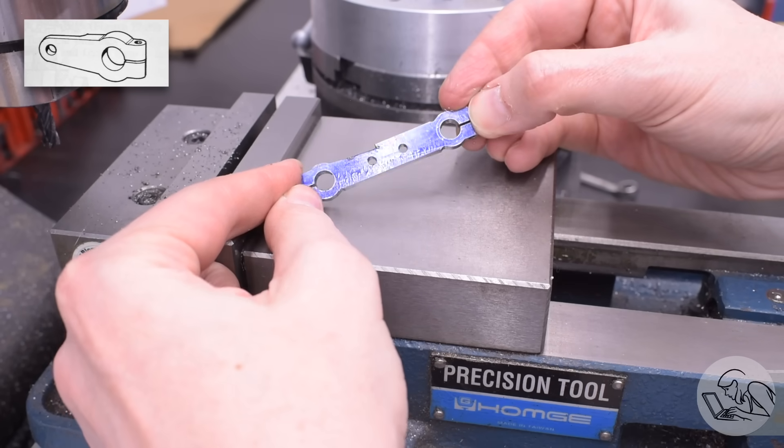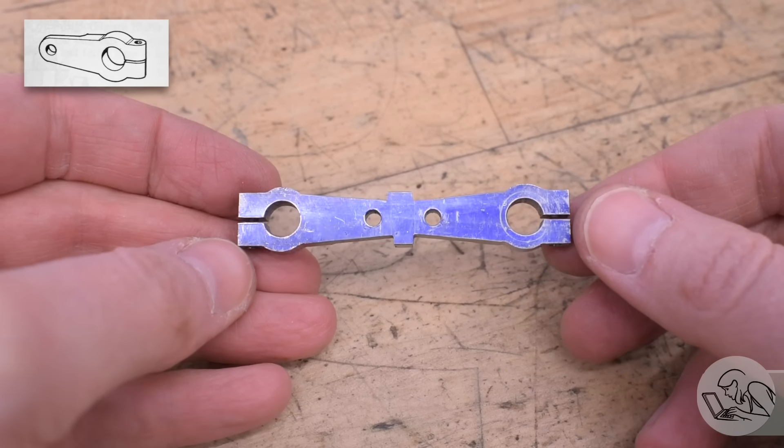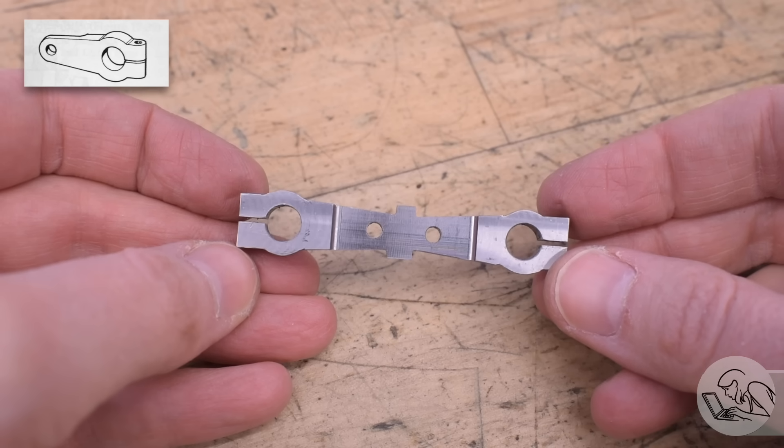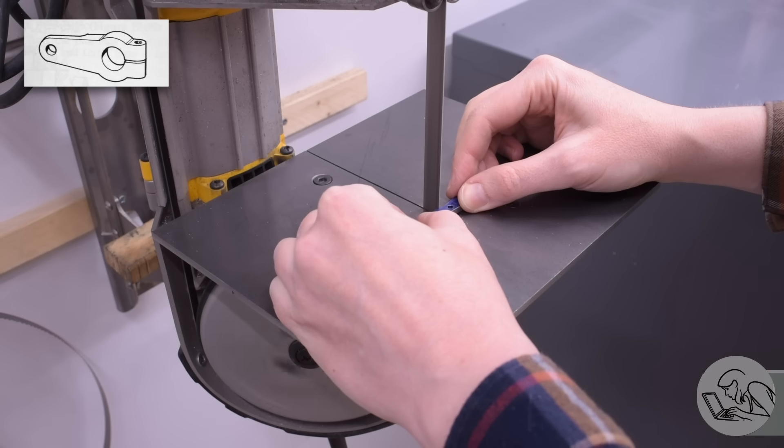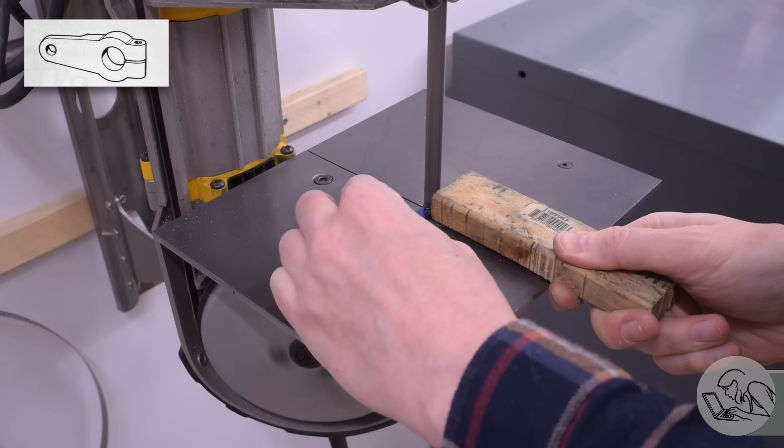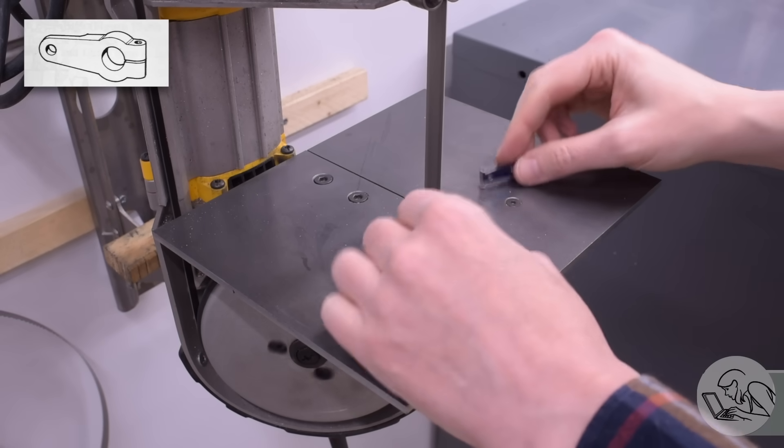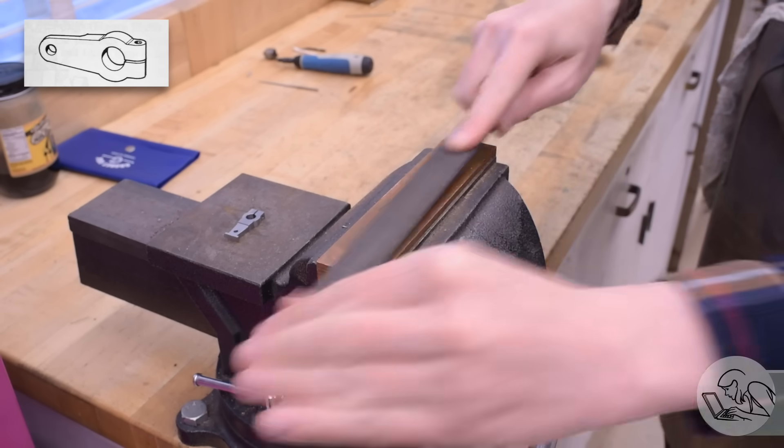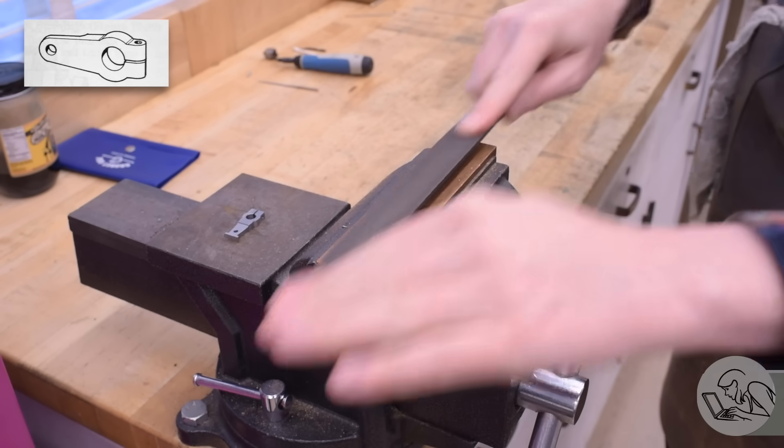That went great so do that three more times and we end up with this. This is all the operations needed on the two parts while they're still together so that chunk of waste in the middle can go away now. It's time to go back to the bandsaw and cut them apart. I left myself a generous amount of waste material between the two parts so that I wouldn't have any trouble bandsawing them. I left a little more material than necessary though so I knocked off the excess with a file because that'll make the next step easier.